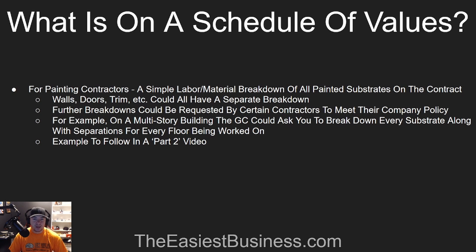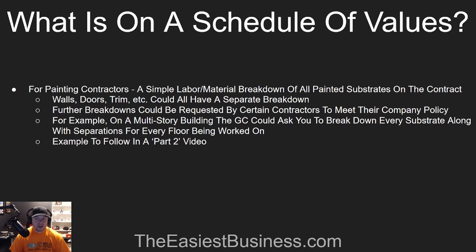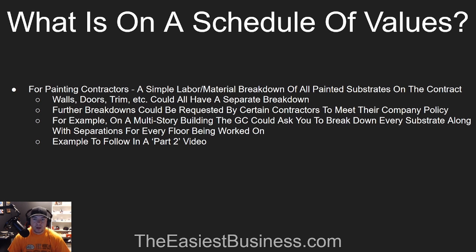But that's pretty much what a schedule of values is, explained in a very simple way — I told you what was on it. In part two I'm going to show you exactly how to make a very basic one. It won't suffice for all general contractors, but for the most part you're usually not going to have anything more in depth than what I show you. You'll obviously have to put the general contractor info, project info, and things like that. So just stick around for part two — I'm sure I'll have it up in the next couple of days. Let me know what you guys thought in the comments below, leave me a thumbs up, hit the subscribe button. I've got big plans for the channel. Hope you guys enjoyed your weekend — until next time, see ya.